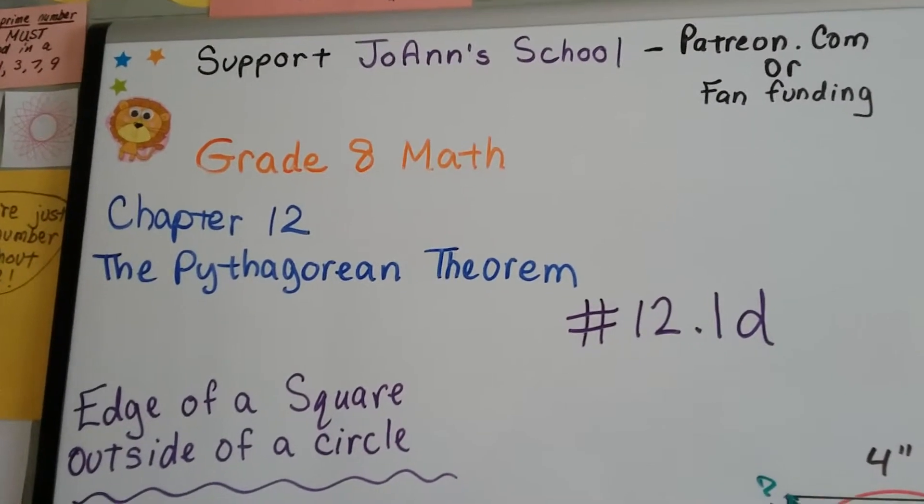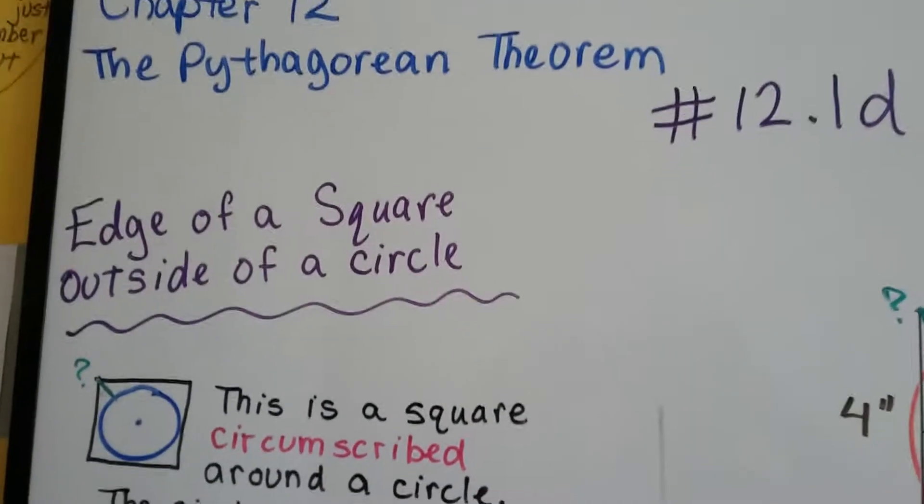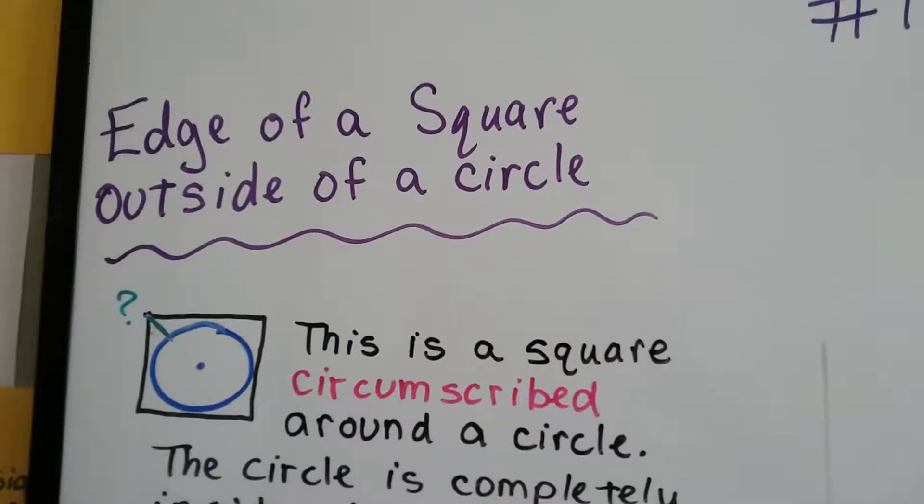Grade 8 math number 12.1d. We're still talking about the Pythagorean Theorem, and now we're going to talk about the edge of a square that's sticking outside of a circle.